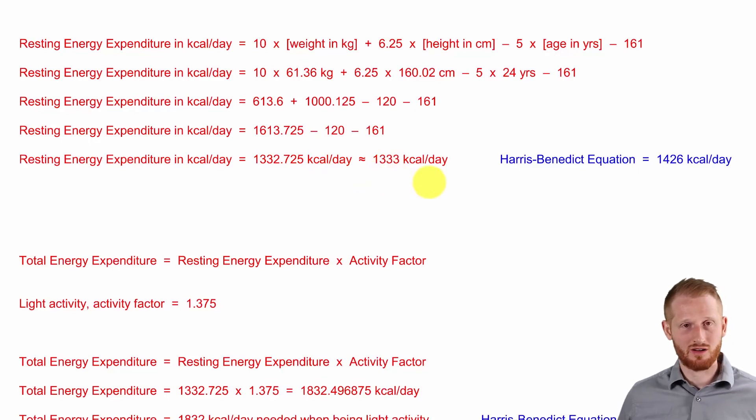And so just to compare this to another equation. So again, the Harris-Benedict equation, using the same person, I get 1,426 kilocalories per day using the Harris-Benedict equation. And I get 1,333 kilocalories per day for the resting energy expenditure using the Mifflin-St. George equation.